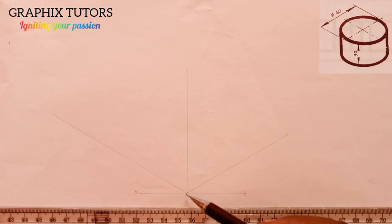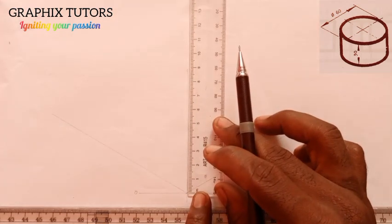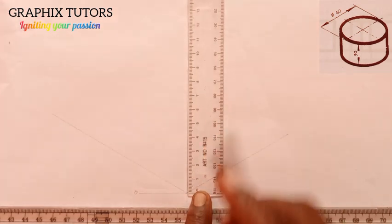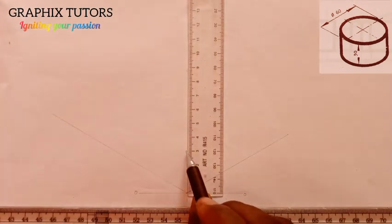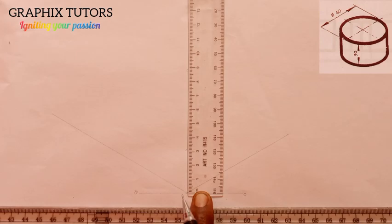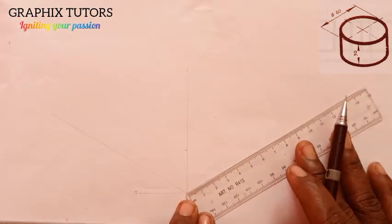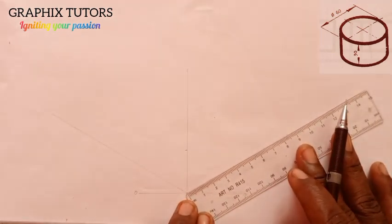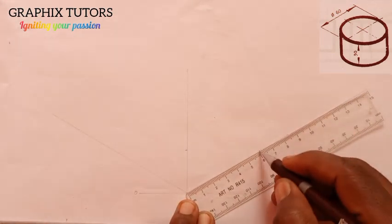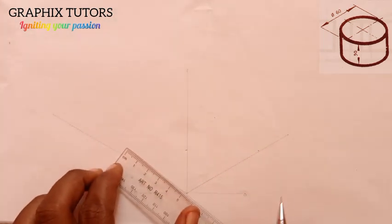So from this point here I'll start measuring. We said that the height is 30, so from this starting point I'll measure from zero to 30 — that is the height. Then the length is also 60 — this is 60 for the length — and the width is also 60.